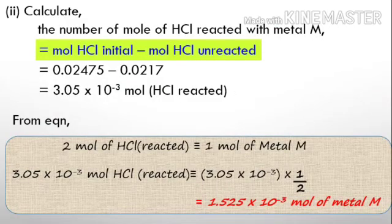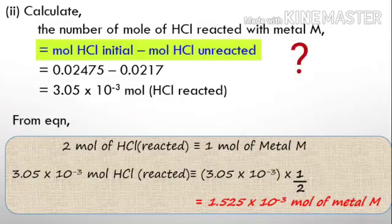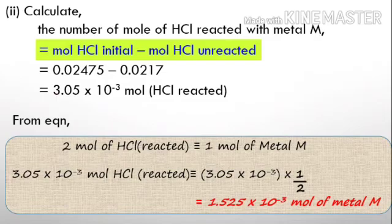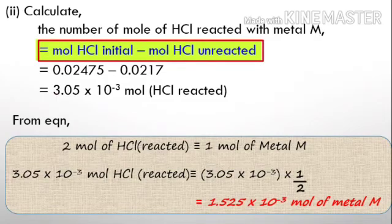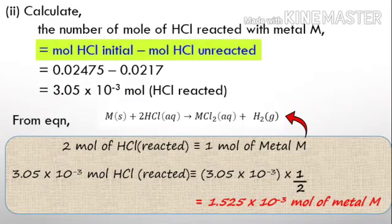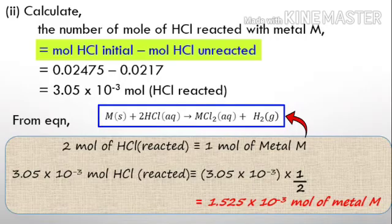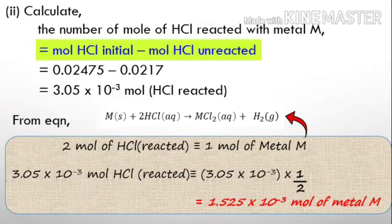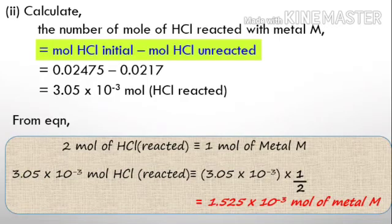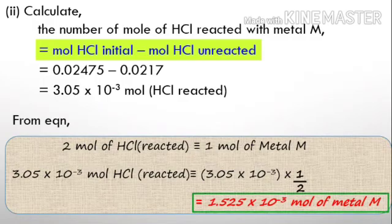Second, calculate the number of moles of HCl reacted with metal M. We get the difference between the number of moles of HCl as initial with the moles of HCl unreacted, so the number of HCl that reacted is 3.05 × 10^-3 mol. From this equation, 2 moles of HCl reacted is equivalent to 1 mole of metal M. So if we have 3.05 × 10^-3 mol of HCl times 1 divided by 2, the number of moles of metal M is 1.525 × 10^-3 mol.